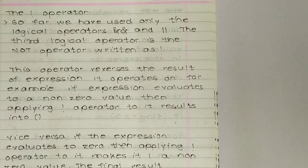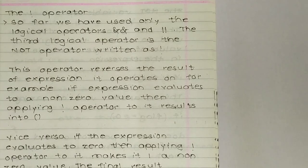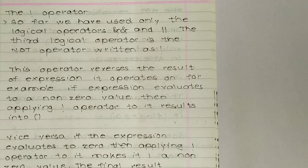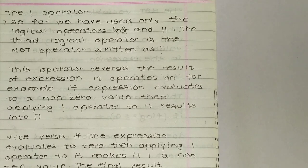This operator reverses the result of the expression it operates on. For example, if an expression evaluates to a non-zero value, then applying the NOT operator to it results in zero.